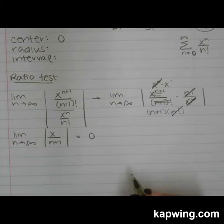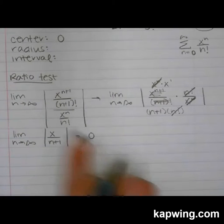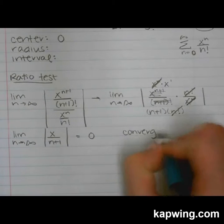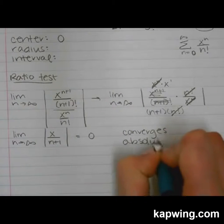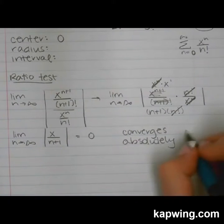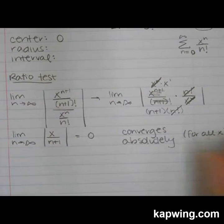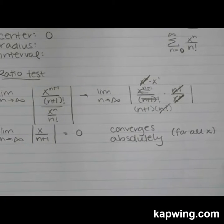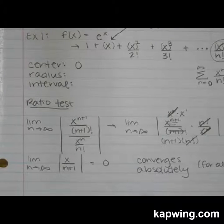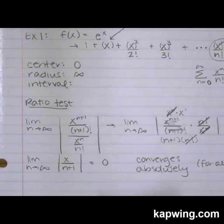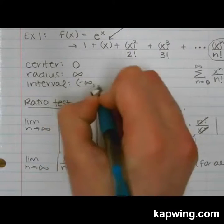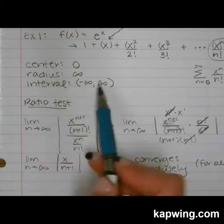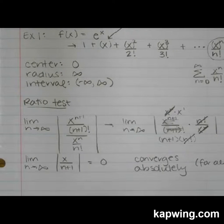We're really finding the limit of x / (n+1). As n goes to infinity, this limit is zero. I'm plugging infinity in for n, not for x. Any time the answer to a ratio test is less than one, that series converges absolutely. So this converges for all x, meaning the radius of convergence is infinity, and the interval of convergence is from negative infinity to positive infinity.